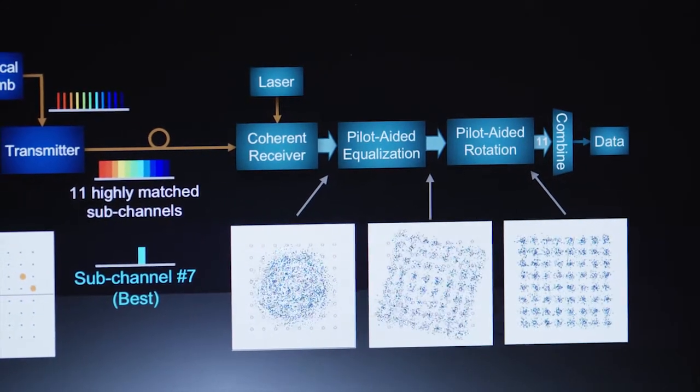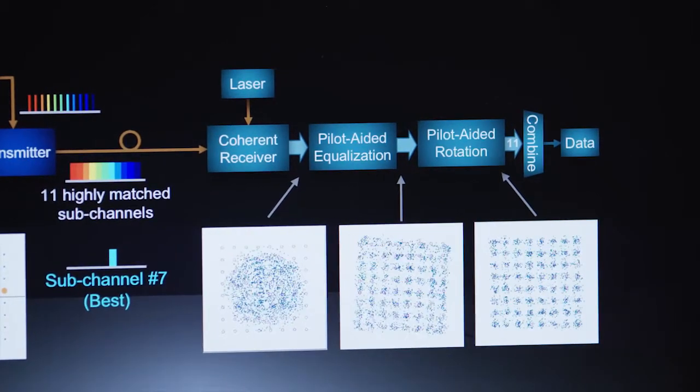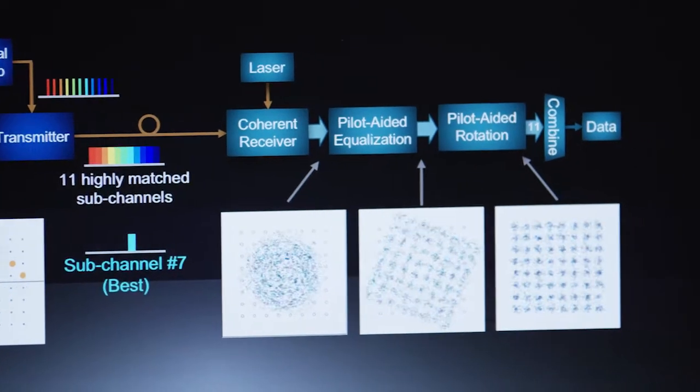So after we've compensated for all this amplitude distortion, we then track this phase rotation using the pilot symbols that we introduced at the transmitter. The receiver knows the symbols that were transmitted.